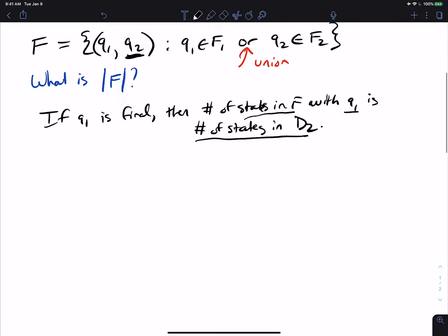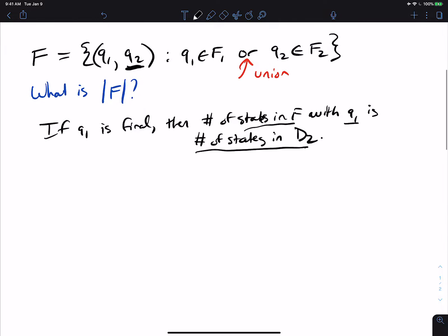So that means that the number of states that are in the set F right here that have any final state from Q1 in it is the number of final states in the first one, which is F1,